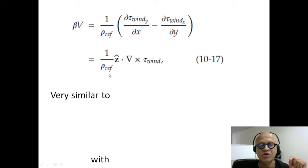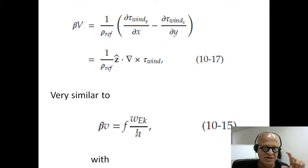So beta V is 1 over rho ref Z hat dot grad cross tau wind, which is very similar to the homogeneous Taylor column. We had looked at beta Vg equals F W Ekman over H.